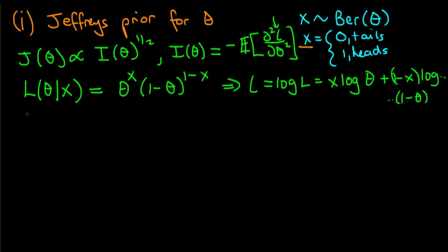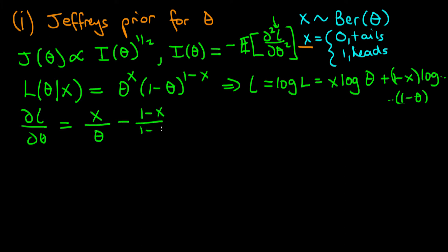We can differentiate the log likelihood with respect to theta — and the logs here are natural logs — to obtain x over theta minus one minus x over one minus theta.